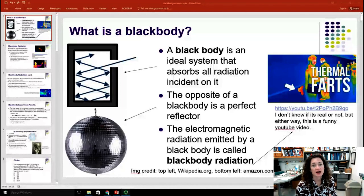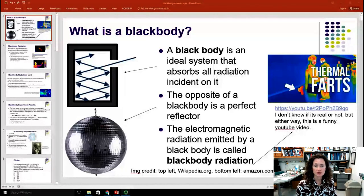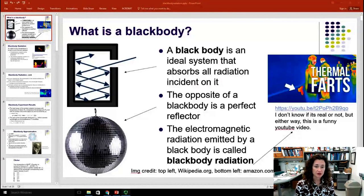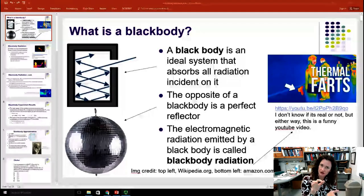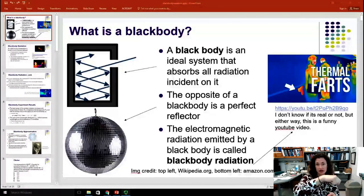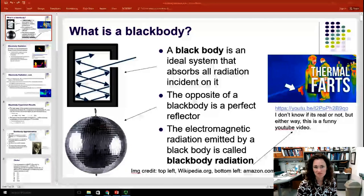A black body is an ideal system that absorbs all the radiation that's incident upon it. The opposite of a black body would be a perfect reflector. Now I like to think of a perfect reflector as a spherical mirror because it would reflect light no matter where you hit it. So I like to think of a disco ball.